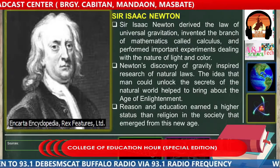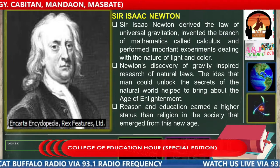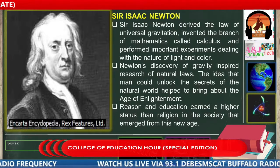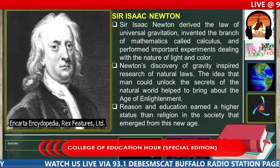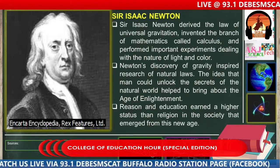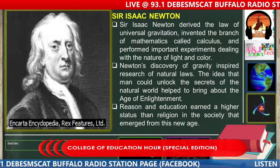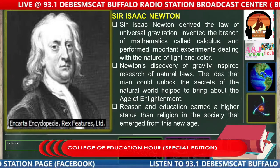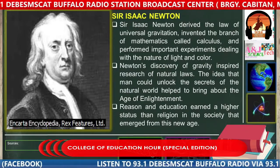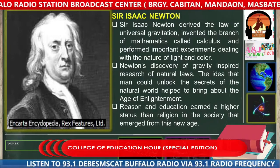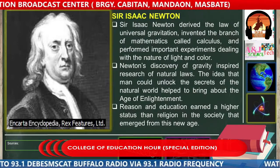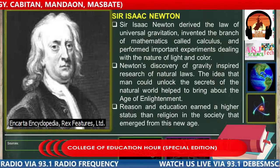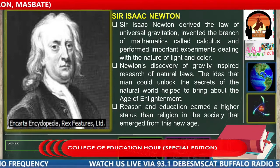Next is Sir Isaac Newton. Newton derived the law of universal gravitation, invented a branch of mathematics called calculus, and performed important experiments dealing with the nature of light and color — what we now call optics. Newton's discovery of gravity inspired research into natural laws. The idea that man could unlock the secrets of the natural world helped bring about the Age of Enlightenment, where reason and education earned a higher status than religion in society.